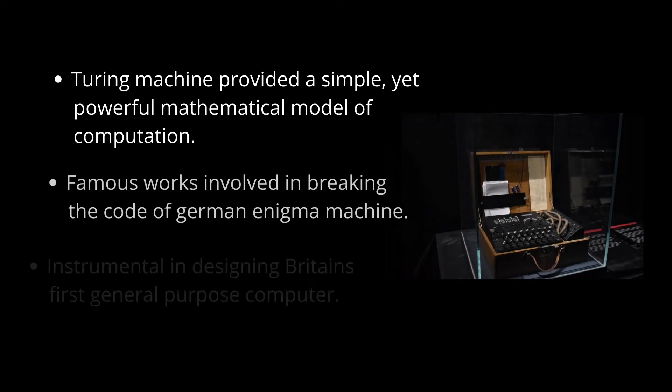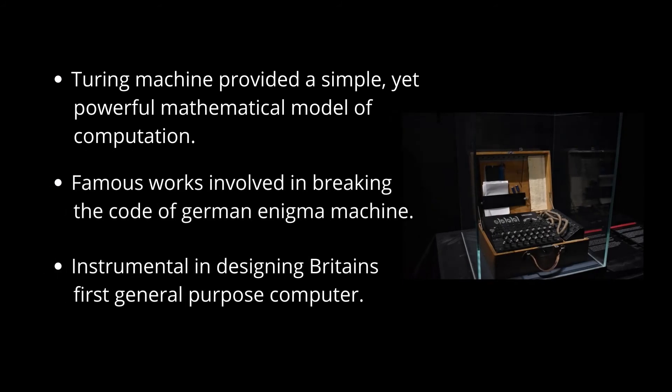A Turing machine is a theoretical machine that provided simple yet powerful mathematical models of computation. One of his famous works involved breaking the code of the German Enigma machine, which is believed to have shortened World War II by a couple of years and saved millions of lives. After the war, he was instrumental in designing Britain's first general-purpose computer.